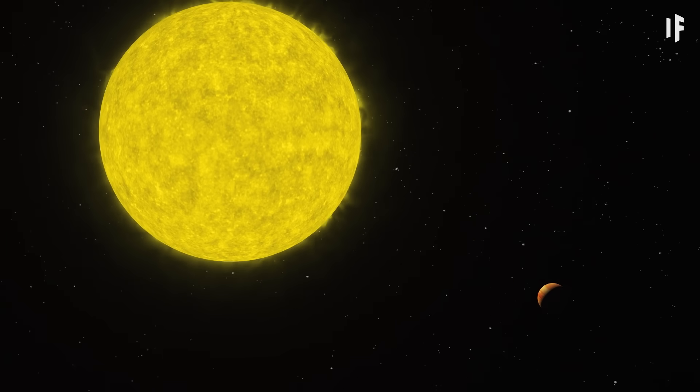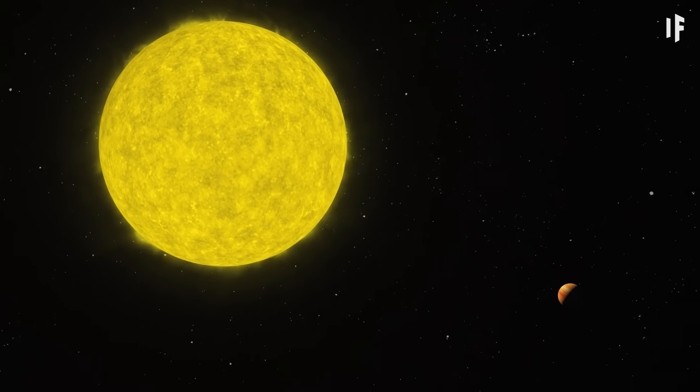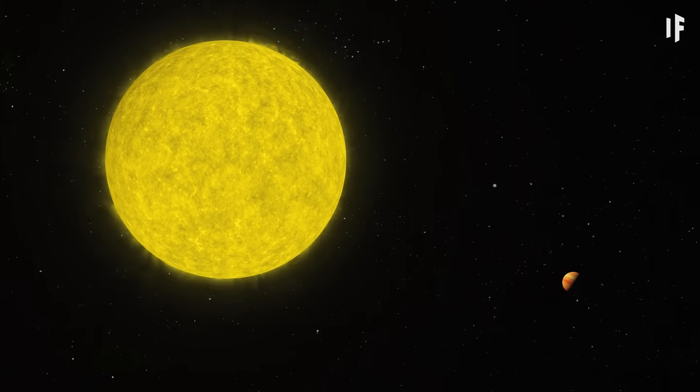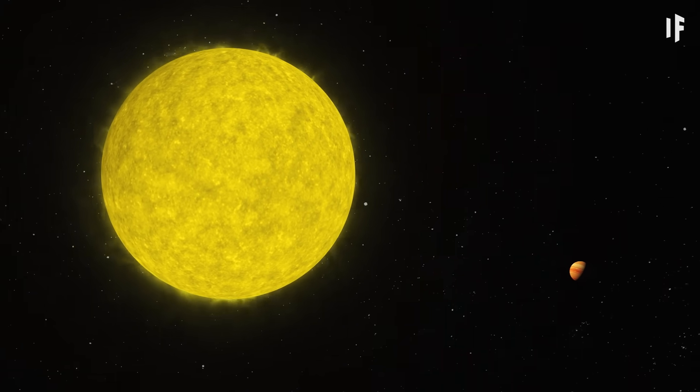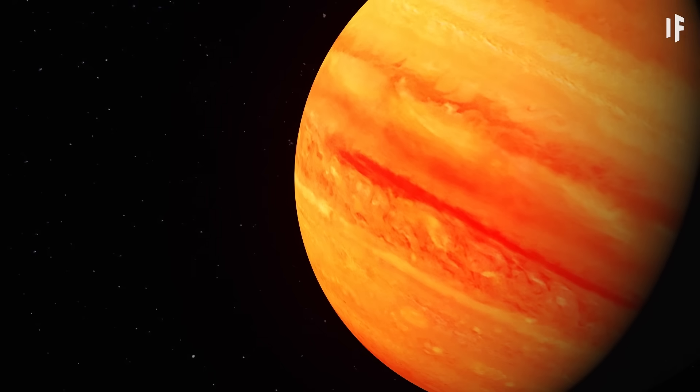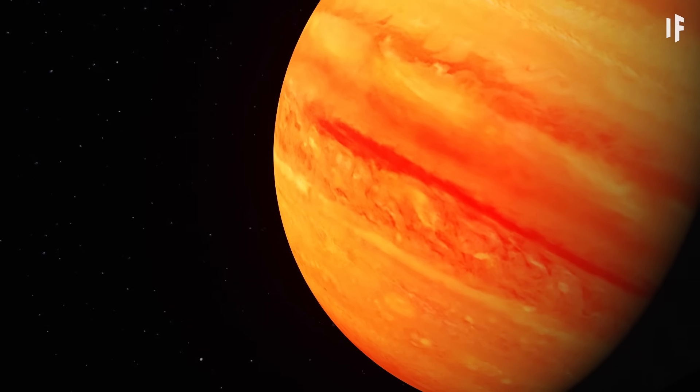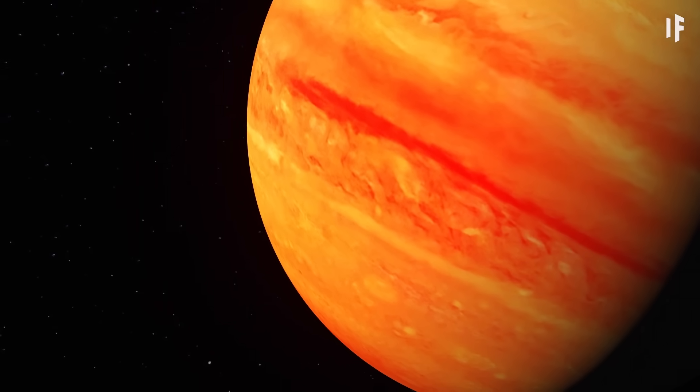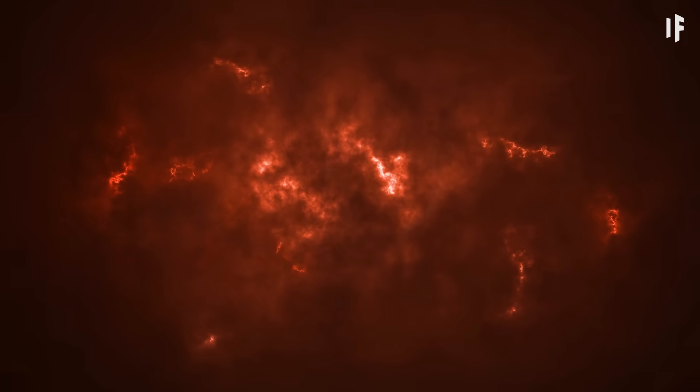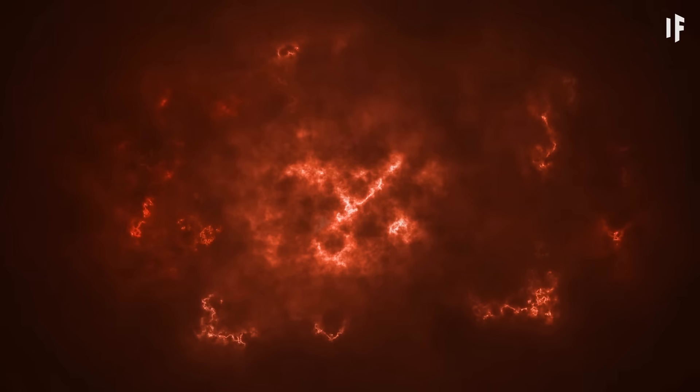And somehow, it's even closer to its star, too. You'd find this world to be incredibly scorching hot. Surface temperatures on this planet average around 1700 degrees Celsius. That's so hot that it turns metal to gas, creating iron clouds in the upper atmosphere.